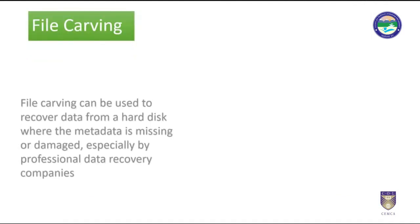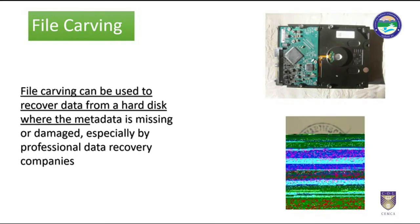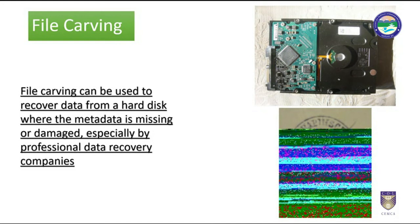File carving can be used to recover data from a hard disk where the metadata is missing or damaged, especially by professional data recovery companies. When a file is deleted, only the entry in the file system metadata is removed. When the actual data is still on the disk, after a format and even a repartitioning, most of the raw data may be untouched and can be recovered using file carving. All file systems contain metadata describing the actual file system — at a minimum, the hierarchy of folders and files with names, and for each file the physical address on the hard disk where it is stored. A file might be scattered in fragments at different physical addresses. File carving is the process of trying to recover files without this metadata.